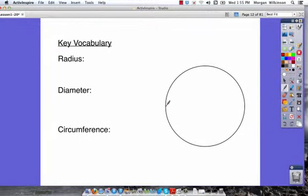So the radius. Hopefully you're thinking of what the radius is. If we know the center of the circle is here, then the radius of the circle must be the distance from the outside to the center. So the radius, the radius we've got in red.